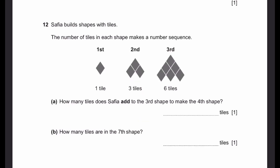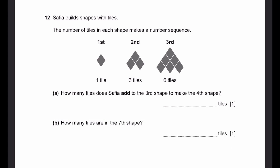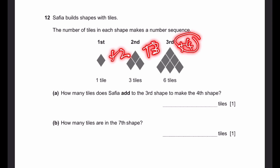Let's go to question 12. Safiya builds shapes with tiles. The number of tiles in each shape makes a number sequence. How many tiles does Safiya add to the third shape to make the fourth one? We can see that we add 2 to get the second one, and we add 3 to get the third one. So to get the fourth one, we of course add 4 tiles.